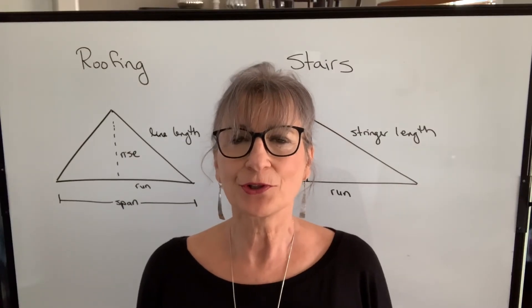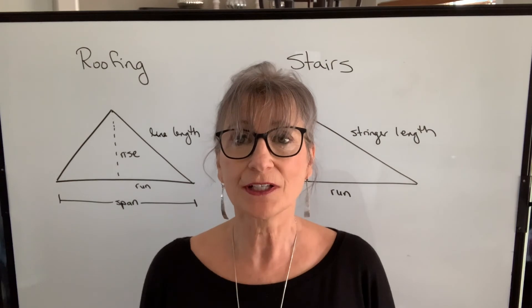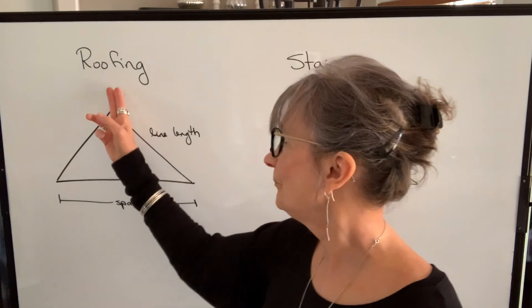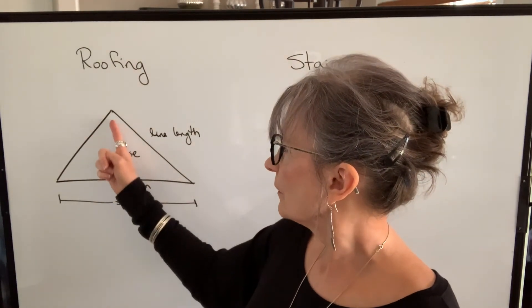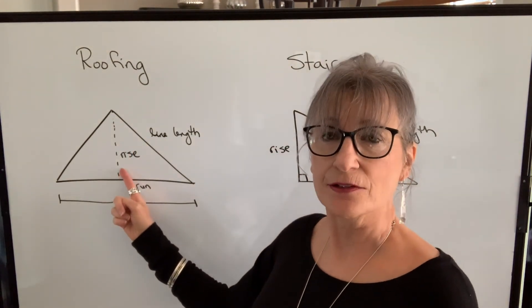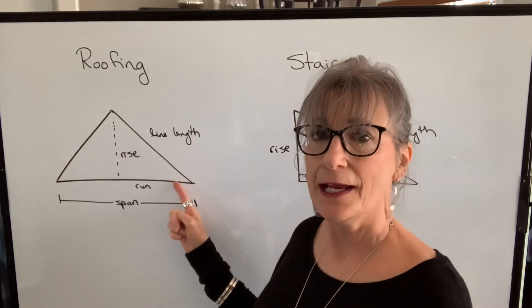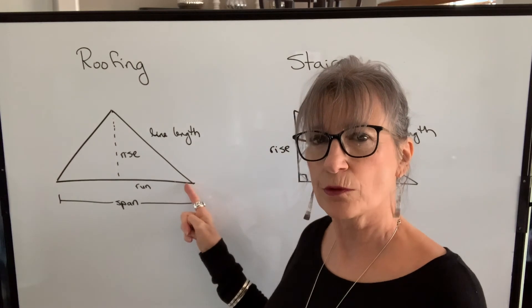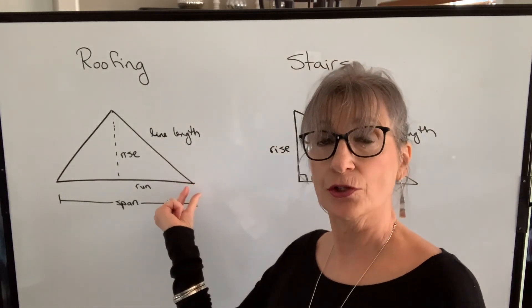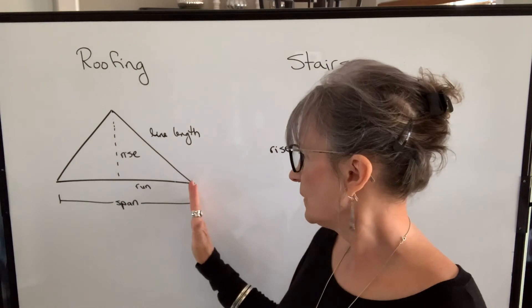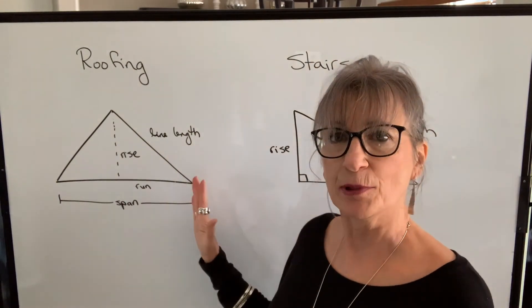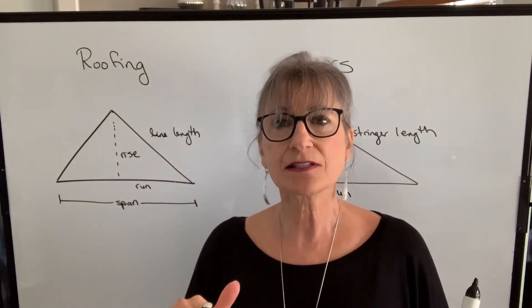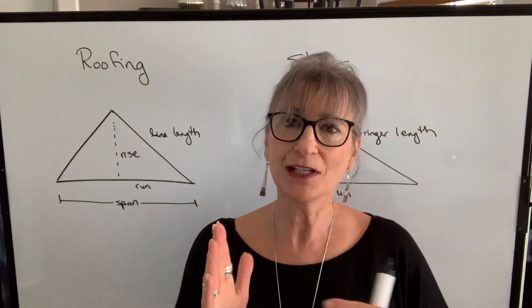Besides using the right triangle theorem at your 3, 4, 5 triangle to find out if a corner is square or not, the right triangle theorem is used in roofing, where your length a can be considered the rise, length b can be considered the run, and then c is what's called the line length. It's not going to be the total rafter length because it doesn't take into consideration the overhang. So you would need to know how far out from the building that overhang extends. And then if you use that amount for your horizontal distance and use your right triangle theorem, you would get the total rafter length.